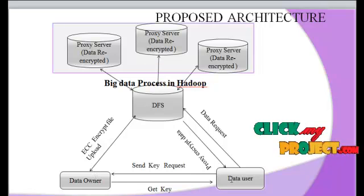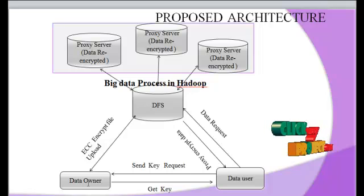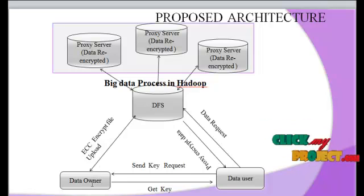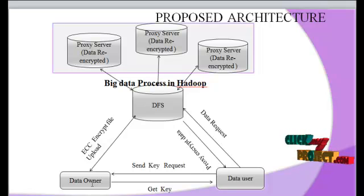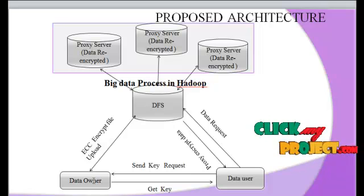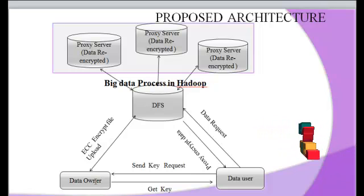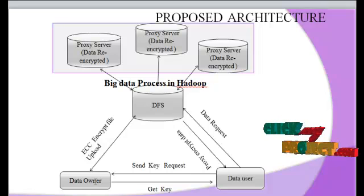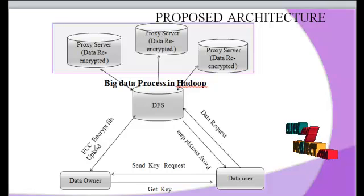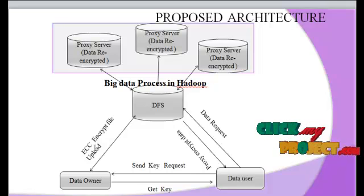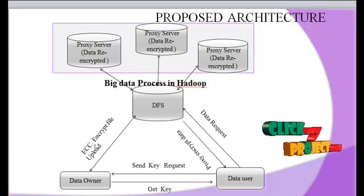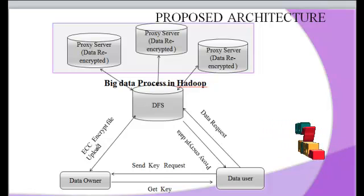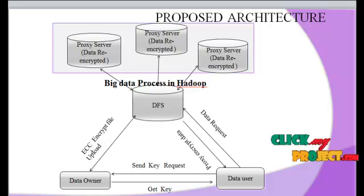First, the data user sends files and authentication details. The owner verifies the user information and then retrieves the file from the user. The data owner then encrypts the file in ECC file format, using elliptic curve cryptography algorithms. The encrypted ECC file is then converted to ciphertext for the client.